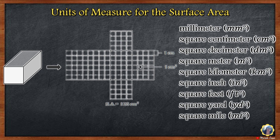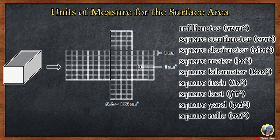For surface area, we use square units. We use square millimeter, square centimeter, square decimeter, square meter, square kilometer, square inch, square foot, square yard, or square mile.